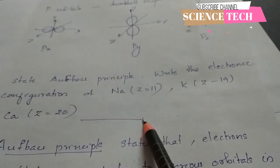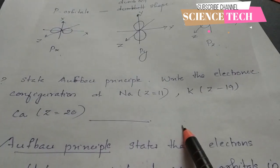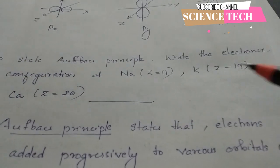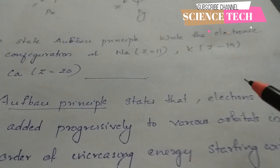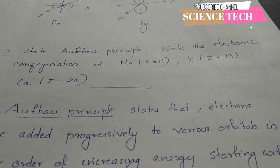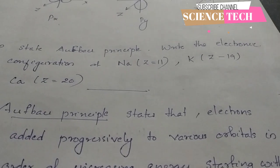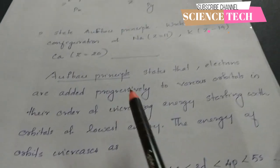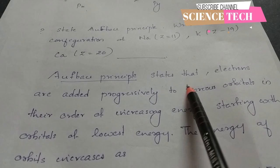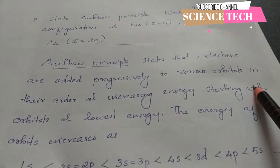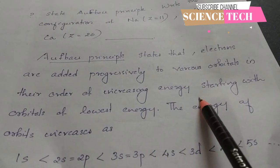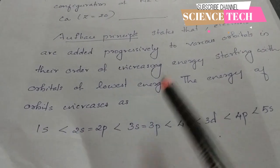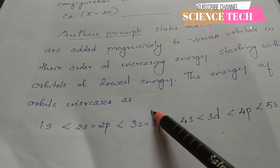For electronic configuration, we use three rules: the Aufbau principle, Hund's rule, and the Pauli exclusion principle. Electrons are added progressively to orbitals in order of increasing energy.